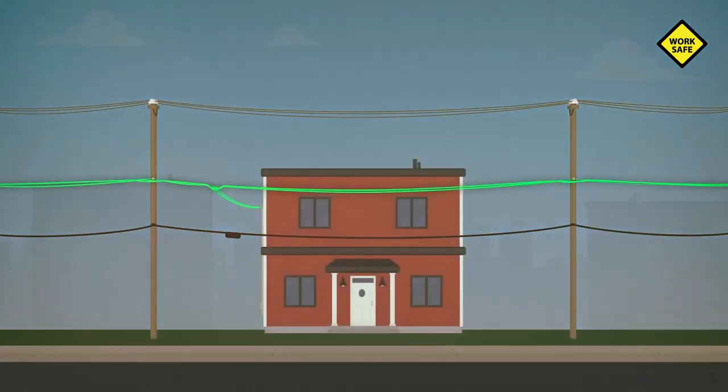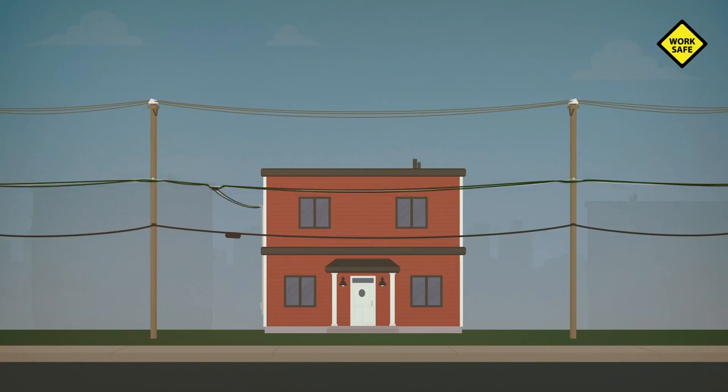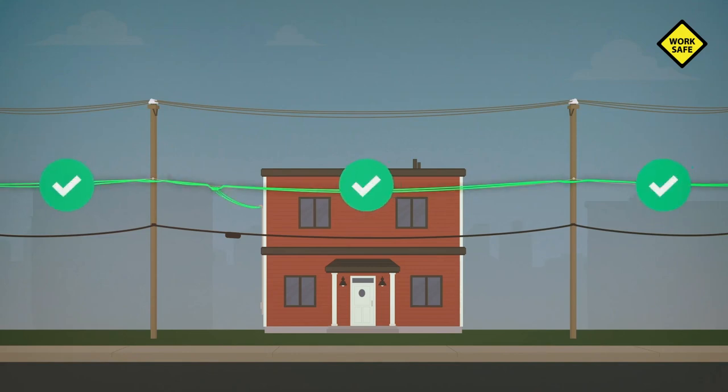Low voltage lines connect homes to the electrical grid. Their voltage is 750 volts or less, and if they're insulated, no minimum approach distance is required. But that doesn't mean they're not dangerous. Always make sure that the insulating sheath is in good condition and avoid touching it while working.